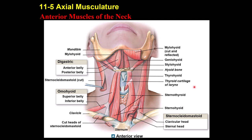The hyoid bone is not articulated with any other bone but has many muscles attached to it. Muscles above the hyoid cause its elevation, and muscles below it cause its depression, which also lowers the larynx. Starting from deep to superficial: geniohyoid connects the mandible to the hyoid bone, and mylohyoid connects the side of the mandible to the hyoid.